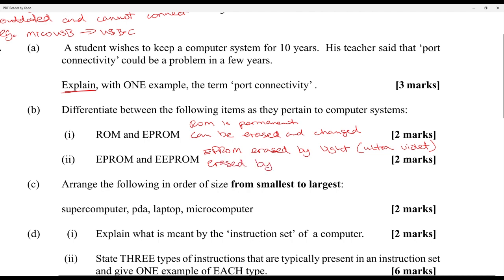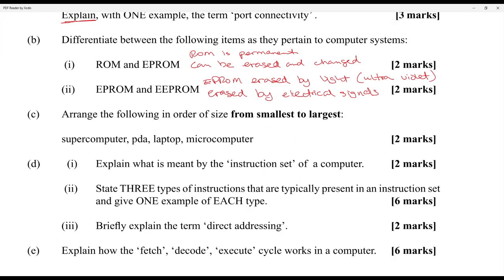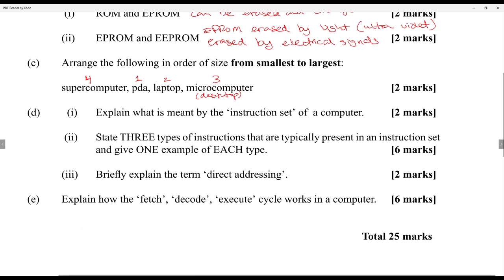Arrange the following in order of size from smallest to largest: supercomputer, PDA, laptop, microcomputer. Since the syllabus is from 2008, a microcomputer is considered a desktop. So the order is: PDA, laptop, microcomputer, then supercomputer. Explain what is meant by the instruction set of a computer: the instruction set is the set of instructions or range of instructions a CPU can carry out, understand, and execute.